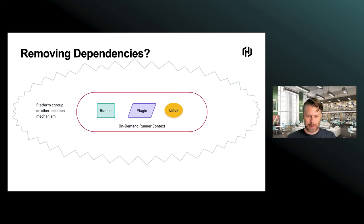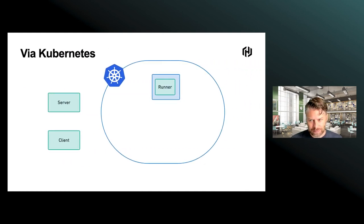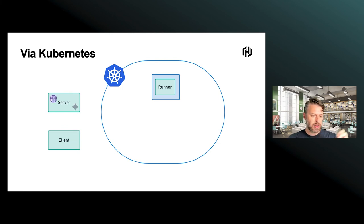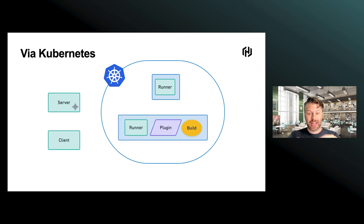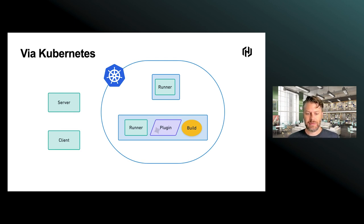Let's look at what it looks like in a specific context — Kubernetes. We've got our request coming in to the client, going on to the server, and we spawn a job. That gets passed off to our runner, which is actually running inside the Kubernetes cluster as a pod — that's the static runner. It's responsible for taking that request to start tasks, and it talks right back to the Kubernetes API of the cluster it's within. Then a new on-demand runner gets spawned, the request flows from the server down to that brand new runner, and then down through from the runner to the plugin, and we've built that image in that context.